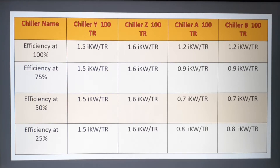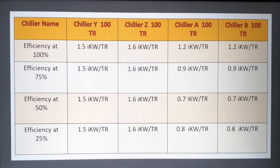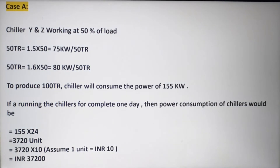If you have a combination of VFD and non-VFD chillers, preferring to run VFD chillers will definitely give you energy savings. I am considering four chillers with a total capacity of 400 TR, and my current load is 100 TR. In Case A I will manage the load using chillers Y and Z, and in Case B I will manage it using chillers A and B — this example will show how much energy and cost can be saved.